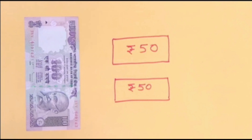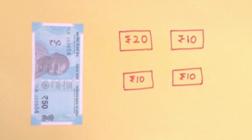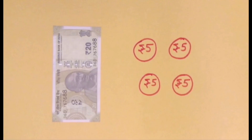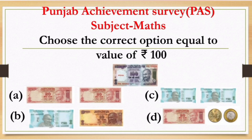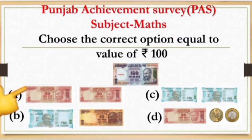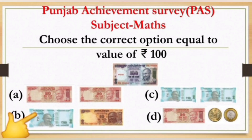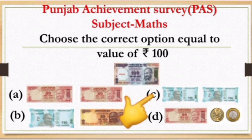Today we have learned how we can draw different notes and coins of smaller value in place of larger ones. Today's pass question is: choose the correct option equal to the value of rupees 100. Option A has 2 notes of rupees 20. Option B has 1 note of rupees 50 and 1 note of rupees 10. Option C has 2 notes of rupees 50.